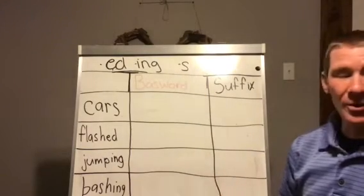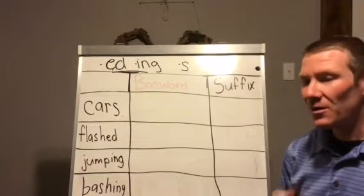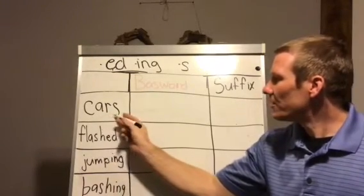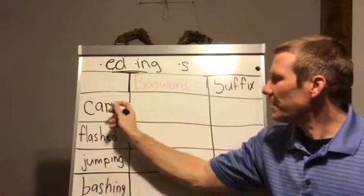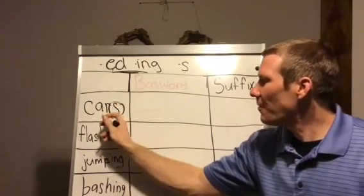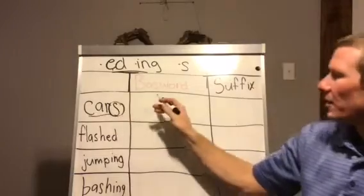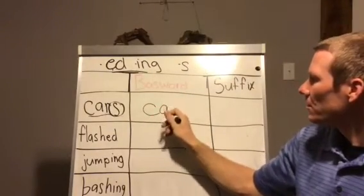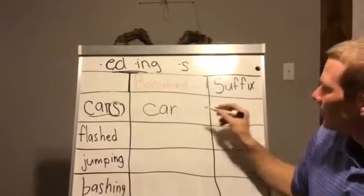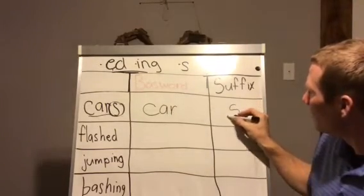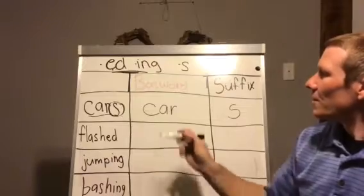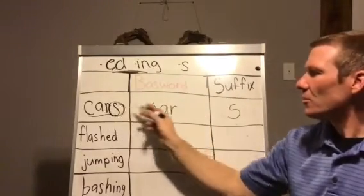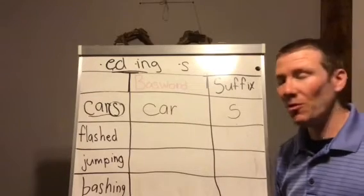Let's take a look at a word we've seen before: cars. I circle my suffix, s, and underline my base word. Now I'm going to put my base word, which is car, and I'm going to put my suffix, which would be the s. So s is my suffix in there, and that changed car to cars. It means there's lots of them, it's plural.